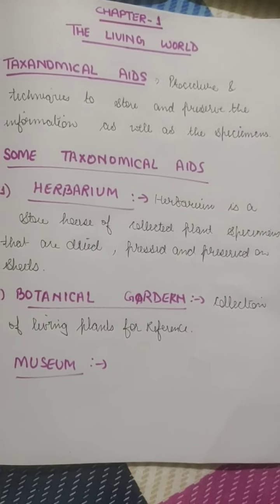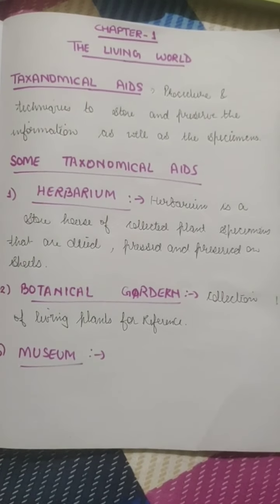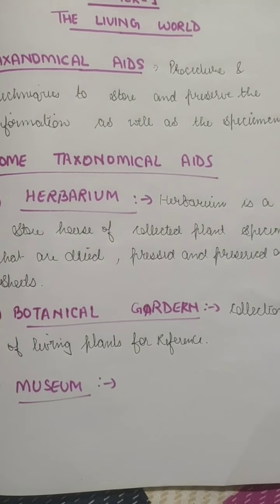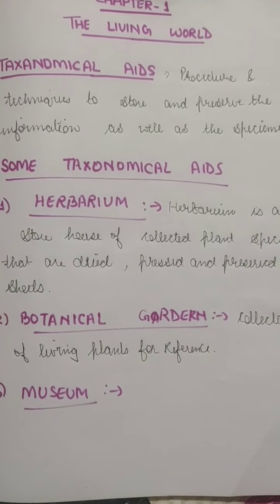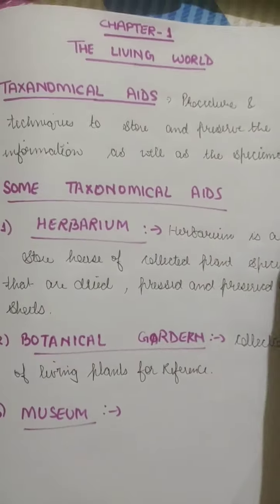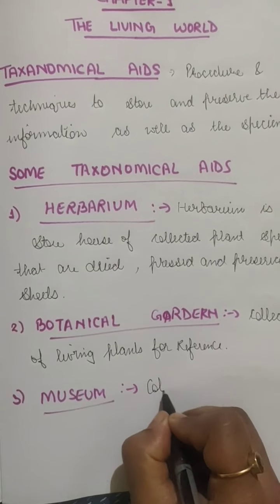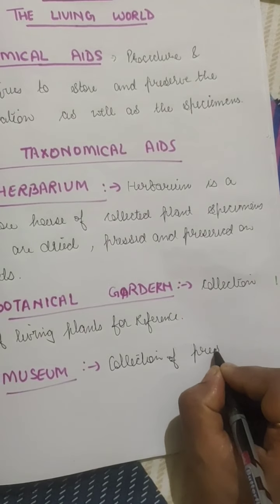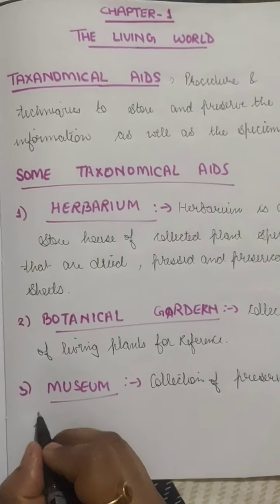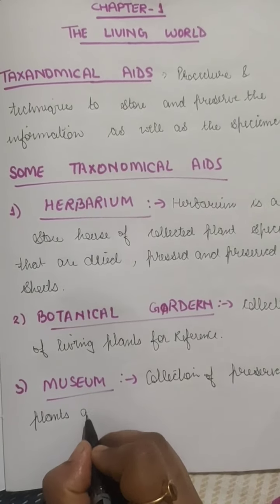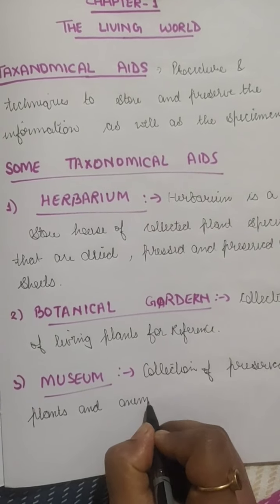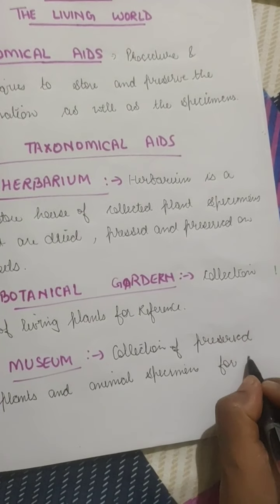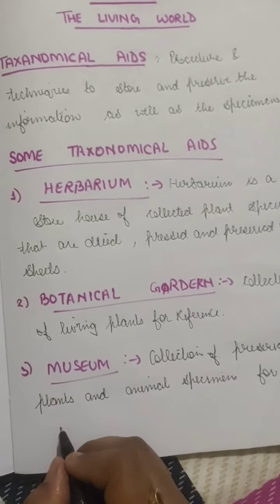Museums also have skeletons of animals. You may have seen movies about dinosaurs where skeletons of animals that no longer exist are displayed. That is how museums have collections of preserved plants and animal specimens for study and reference.